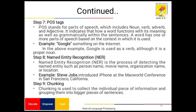Step seven is POS tagging, which stands for parts of speech, including noun, verb, adverb, and adjective. It indicates how a word functions in terms of meaning as well as grammatically within the sentence. A word can have one or more parts of speech based on the context in which it is used. For example, 'Google something on the internet' — in this example, 'Google' is used as a verb, although it is a proper noun. Step eight is named entity recognition: the process of detecting named entities such as person names, movie names, organization names, or locations. For example, 'Steve Jobs introduced iPhone at the Macworld conference in San Francisco, California.'